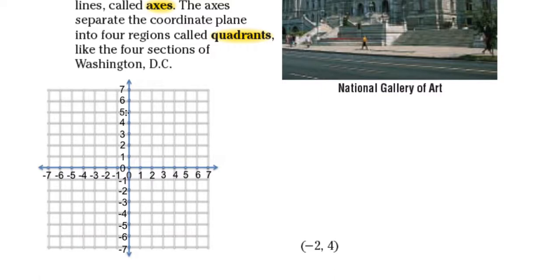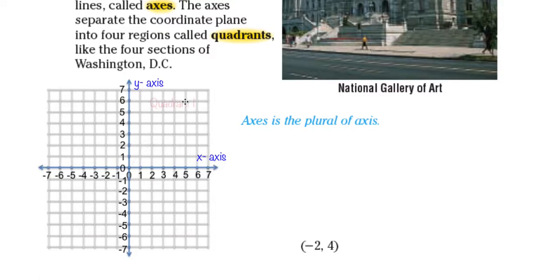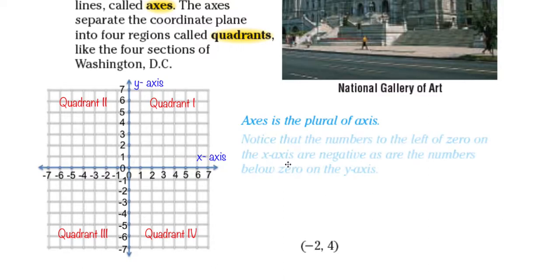The number line that goes up and down, or vertical, is called the y-axis. The horizontal number line of our coordinate system is called the x-axis. Axes is the plural of axis. This is quadrant one, quadrant two, quadrant three, and quadrant four. The numbers to the left of zero on the x-axis are negative, as are the numbers below zero on the y-axis. So all these numbers will be negative on our coordinate system.